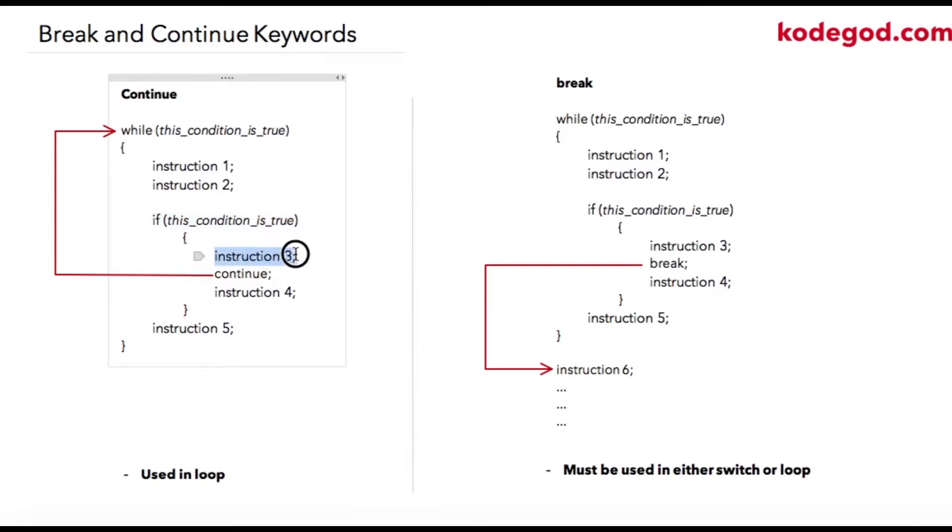Now because I have added a continue keyword over here, as soon as the controller reaches this statement, the controller will go back to the starting of the while loop again. So in this case, instruction 4 will be skipped.